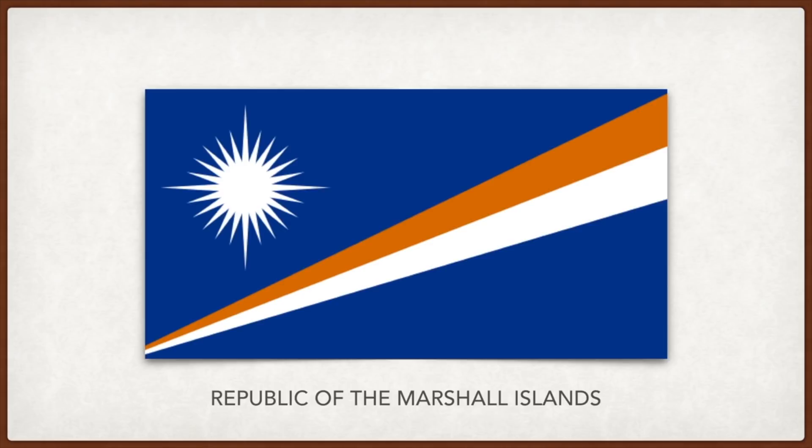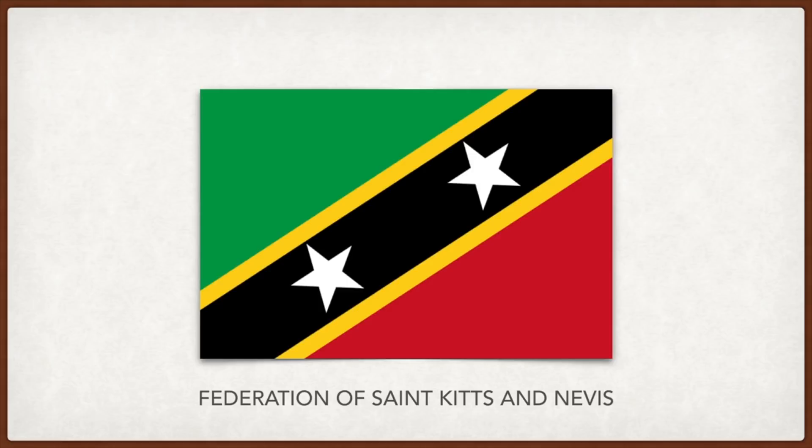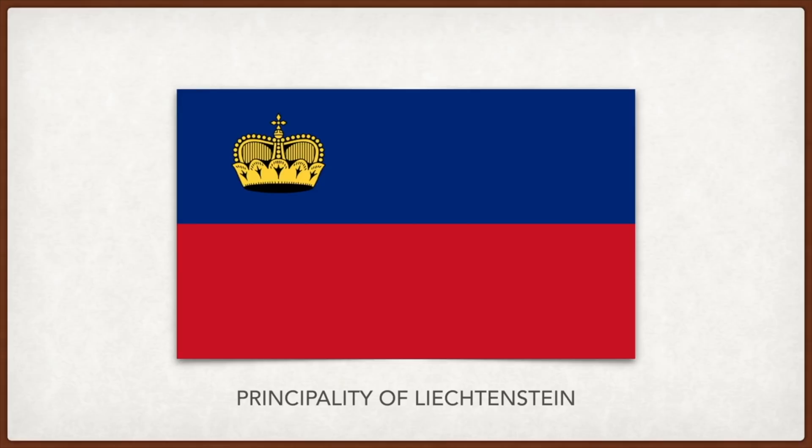Saint Kitts and Nevis: the green is for the fertility of the islands, red is for the years of struggle against slavery and colonialism, the black stripe represents the African heritage of the people, yellow is for sunshine, and the two stars are for the two islands and a symbol of hope. Liechtenstein: blue is for the sky, red is for the evening fires in homes, and the crown stands for unity of the people and their prince. Monaco: red and white have been the colors of the ruling House of Grimaldi since the 1300s.